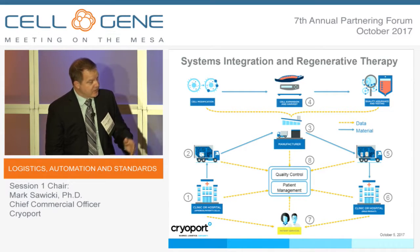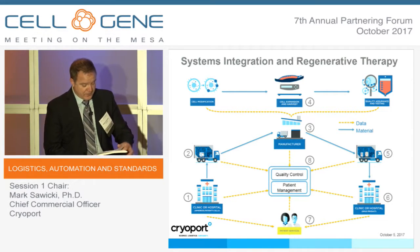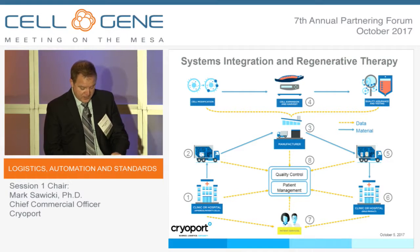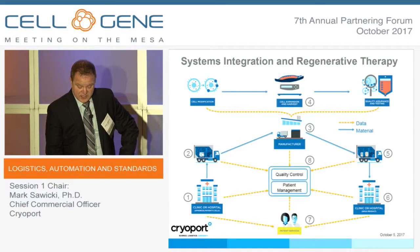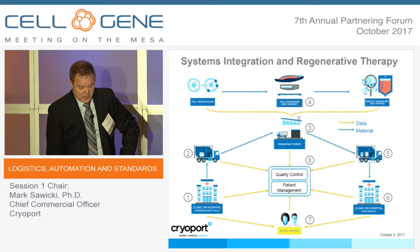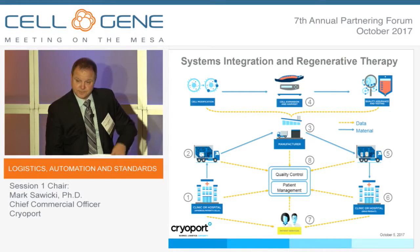I've already introduced our three panelists. Phil is the GM of Cell Therapy Strategy at GE Healthcare. Lane Martin is the Vice President and General Manager of Specialty Distribution Solutions at McKesson. And Bob Weinleck, COO and CCO, Board of Directors of Dysgenics.